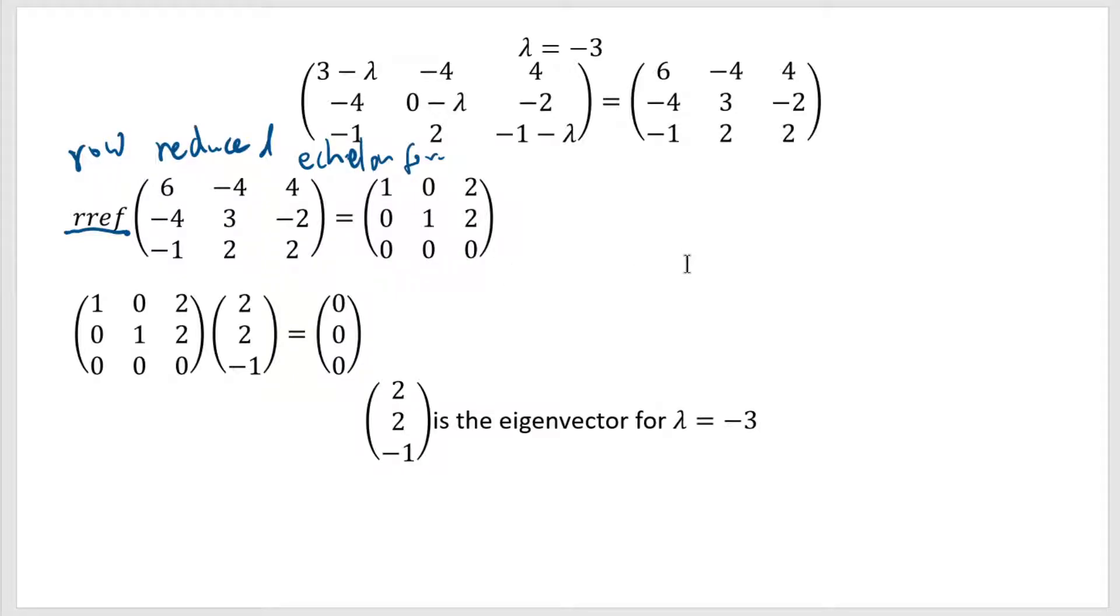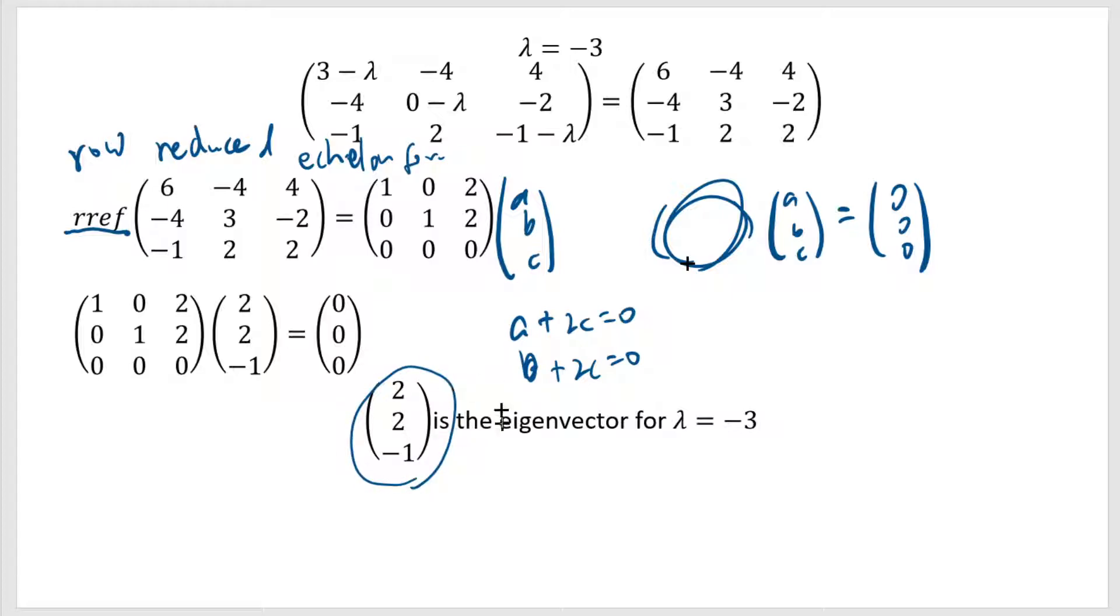The important thing is, if you have something times ABC equals to 0, even if you do the row-reduction, row-reduced echelon form, the equation still is true. So you can replace this by its RREF. That's the trick. So we have this times some matrix ABC equals to 0. And that means 1 times A plus 2 times B plus 2 times C equals to 0, and 1 times B plus 2C equals to 0. So if you set C as negative 1, then A and B will be 2. So that's one solution. After all, we're just trying to find one solution, not all solutions. So we got the next eigenvector.